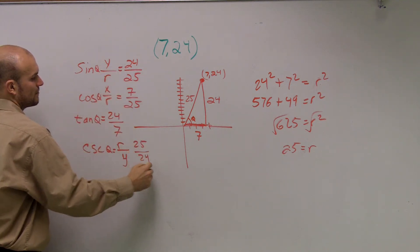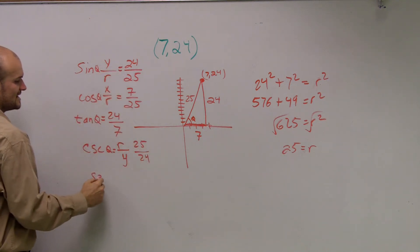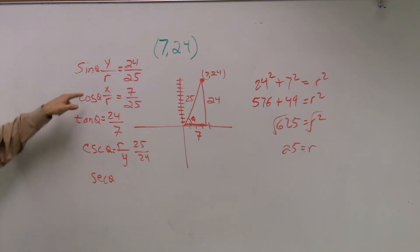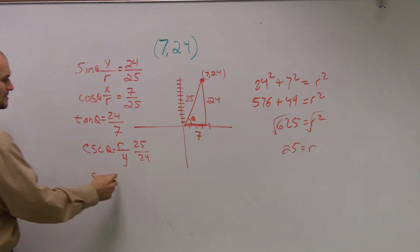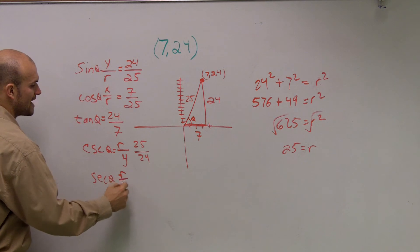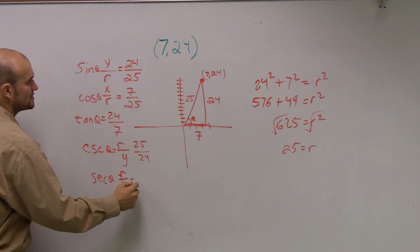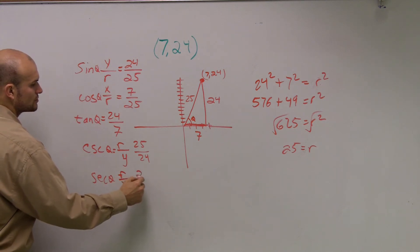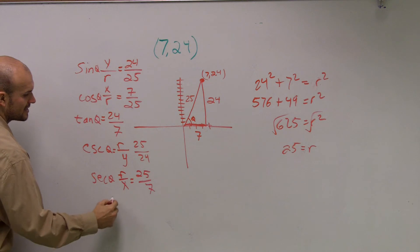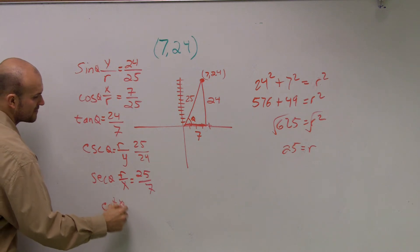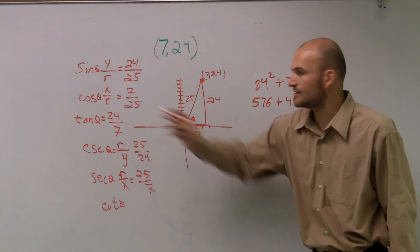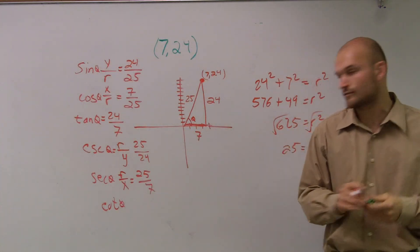Secant of theta is the reciprocal of cosine, so that's r over x, which equals 25 over 7. And lastly, cotangent of theta is the reciprocal of tangent, so it's going to be 7 over 24.